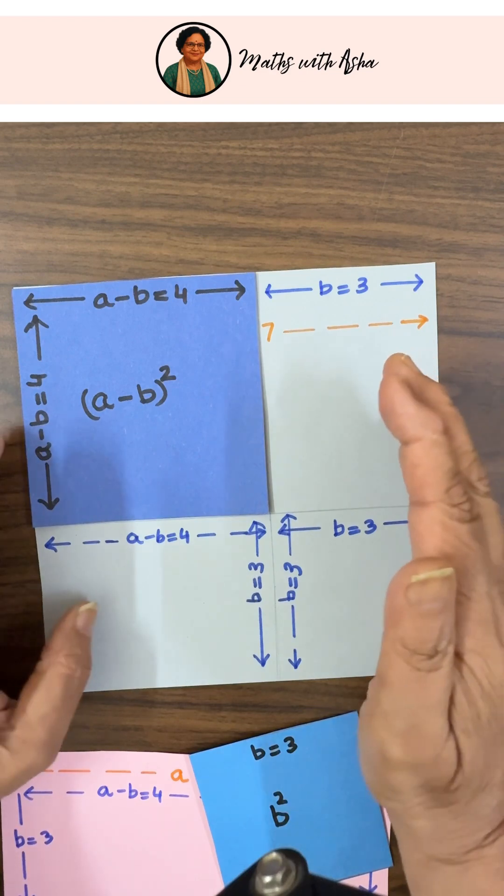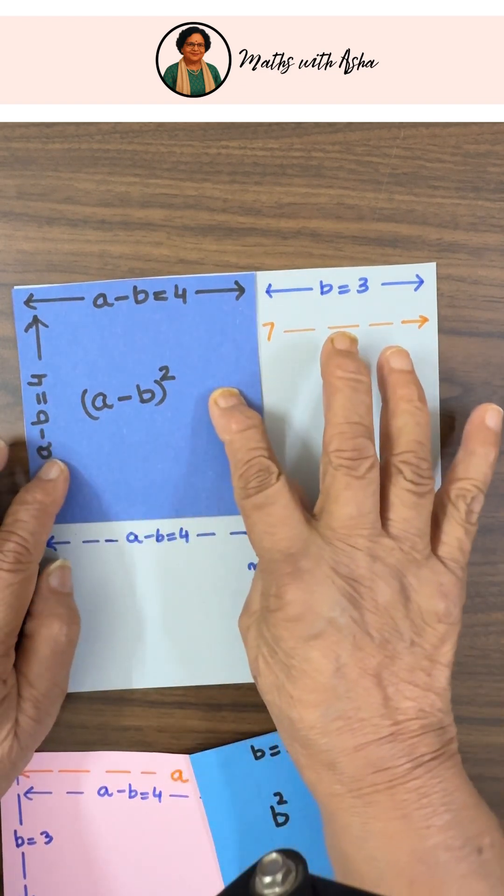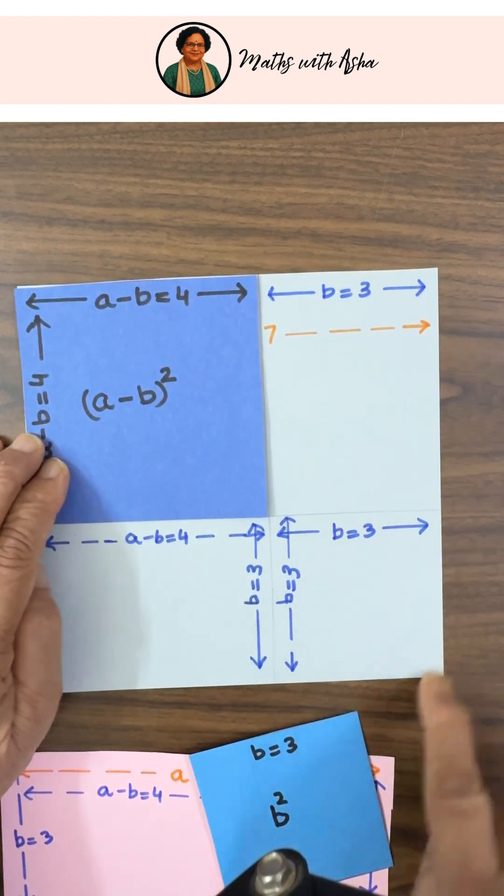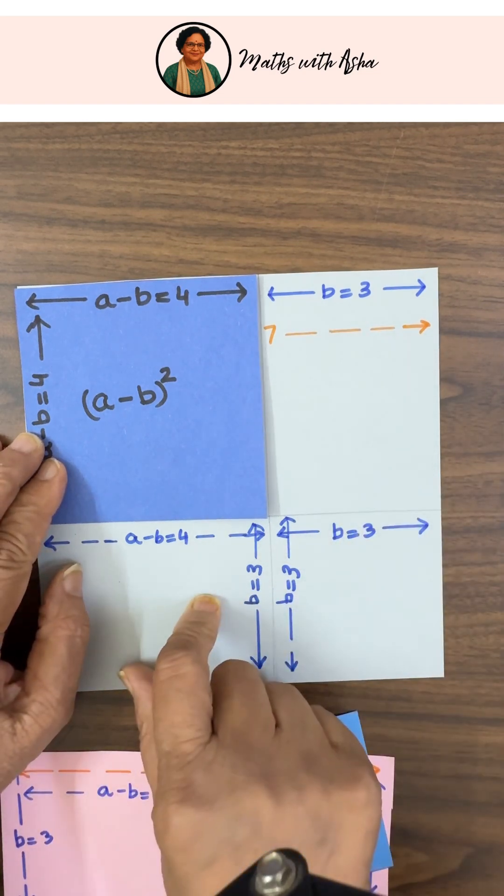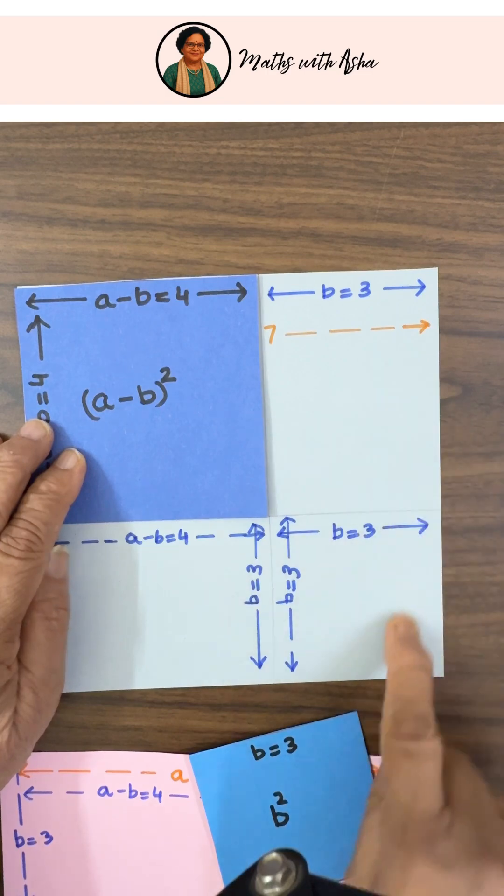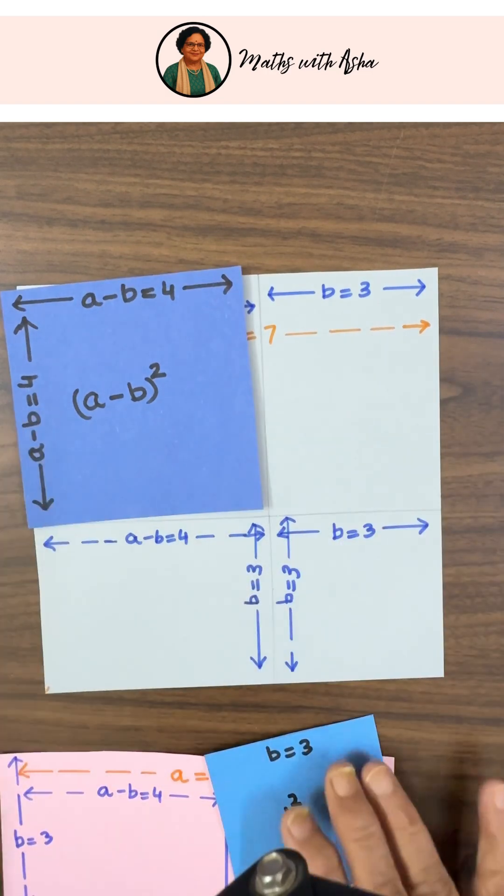So actually, what is A minus B whole square? This will become A square minus this portion, the grey portion you can see. A minus B whole square is equal to A square minus this portion.